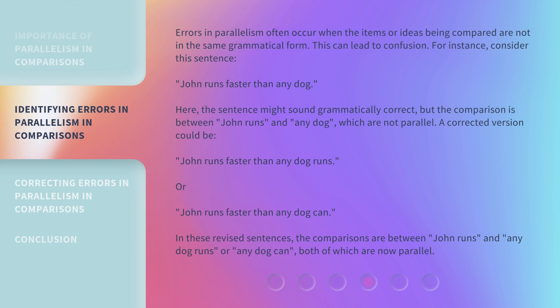Errors in parallelism often occur when the items or ideas being compared are not in the same grammatical form. Here, the sentence might sound grammatically correct, but the comparison is between 'John runs' and 'any dog,' which are not parallel. A corrected version could be 'John runs faster than any dog runs,' or 'John runs faster than any dog can.' In these revised sentences, the comparisons are between 'John runs' and 'any dog runs' or 'any dog can,' both of which are now parallel.